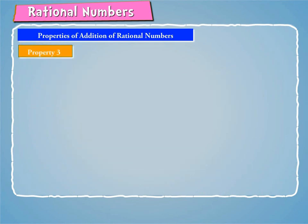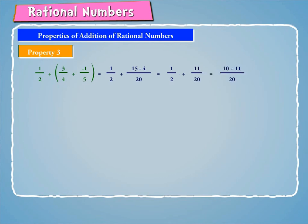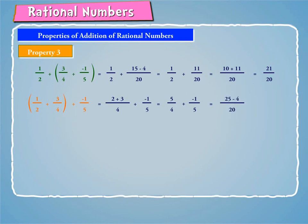Property 3: Let us now consider the following examples. 1/2 + (3/4 + (-1/5)) = 1/2 + (15 - 4)/20 = 1/2 + 11/20 = (10 + 11)/20 = 21/20. Also, (1/2 + 3/4) + (-1/5) = (2 + 3)/4 + (-1/5) = 5/4 + (-1/5) = (25 - 4)/20 = 21/20.